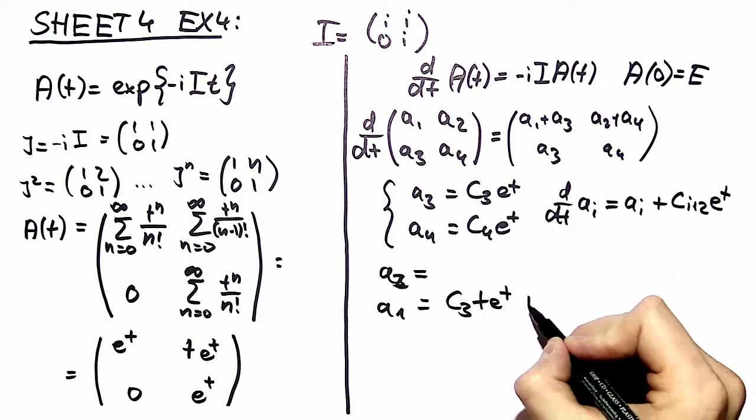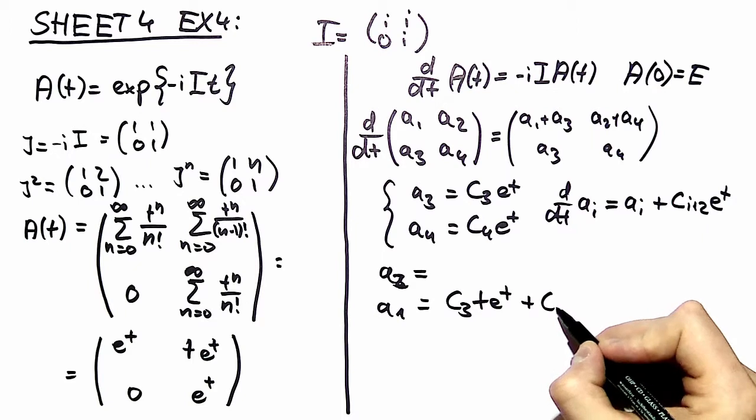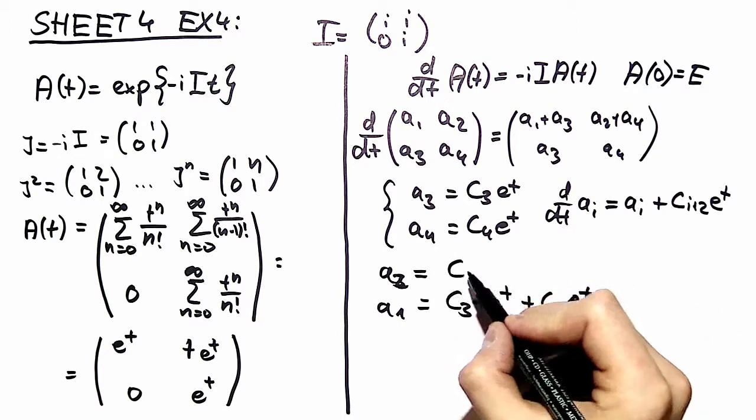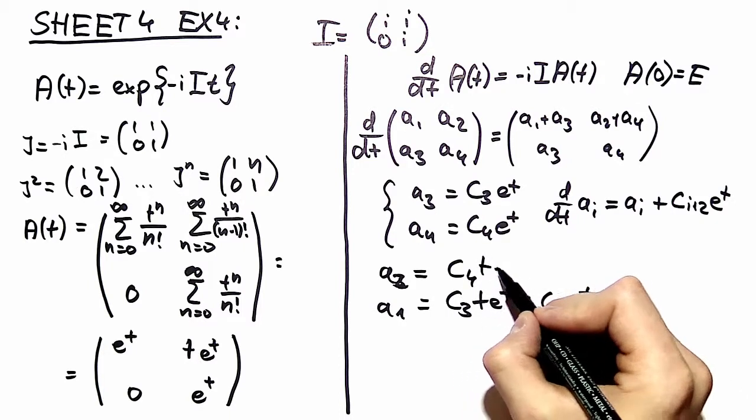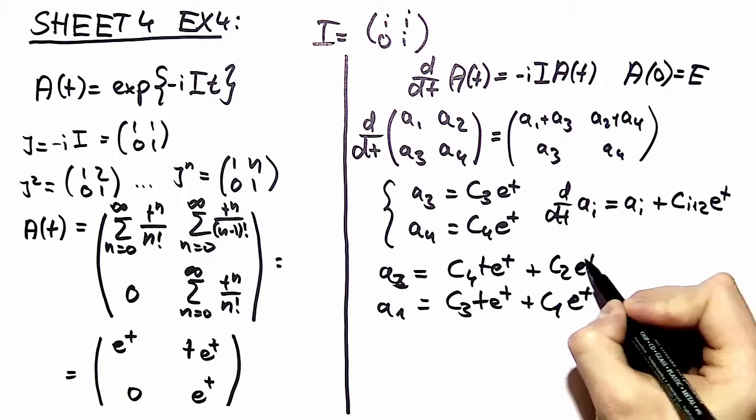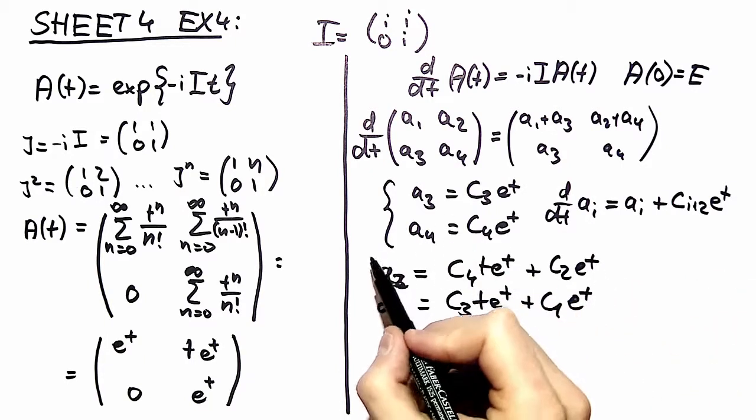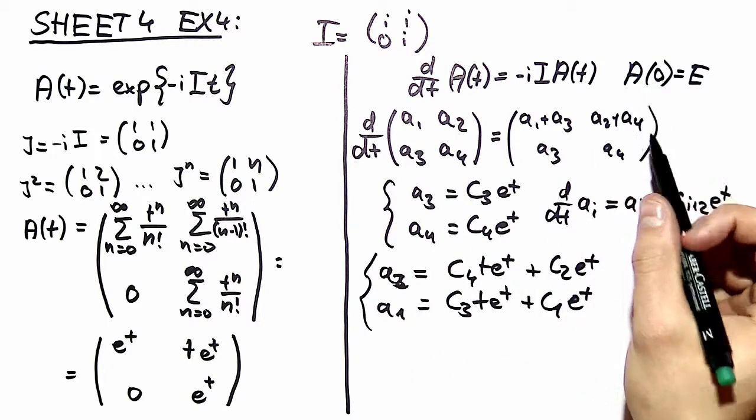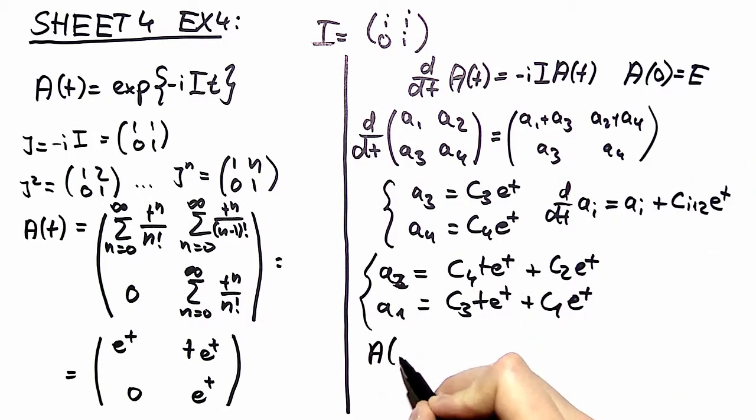And then you can have another term c1 e to the t which can occur as well and the same is true for t e to the t for a2, c2 e to the t. So you have your four solutions for your matrix and now you take the boundary conditions and the boundary conditions read that for t equal to 0 you have to obtain the identity 2 by 2 matrix.